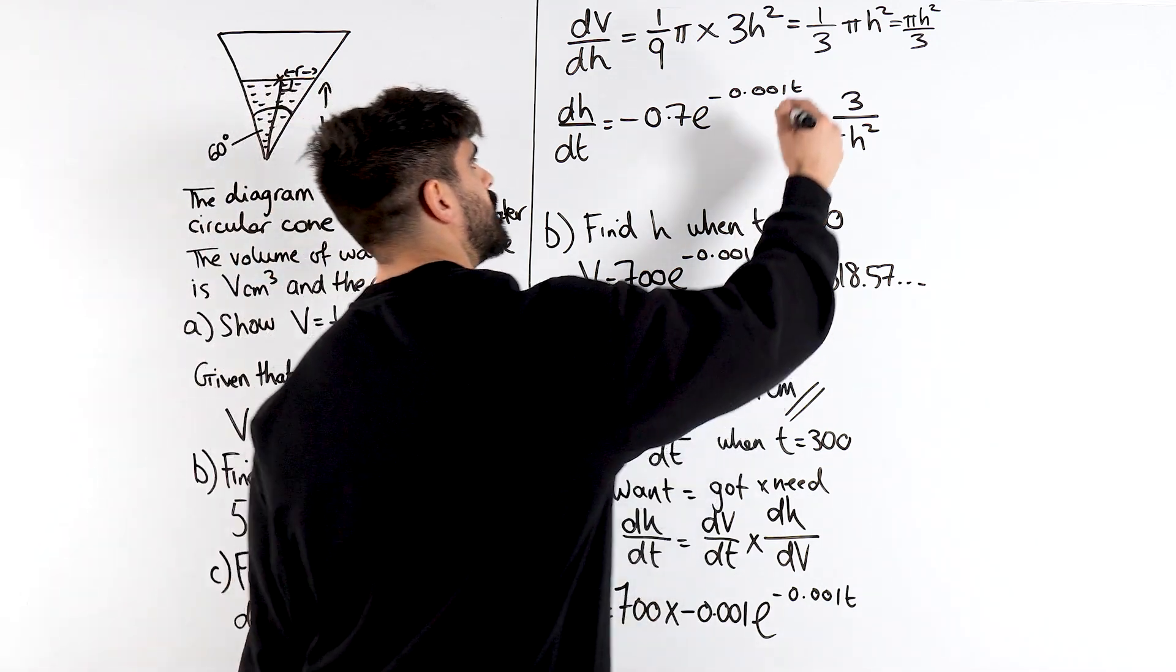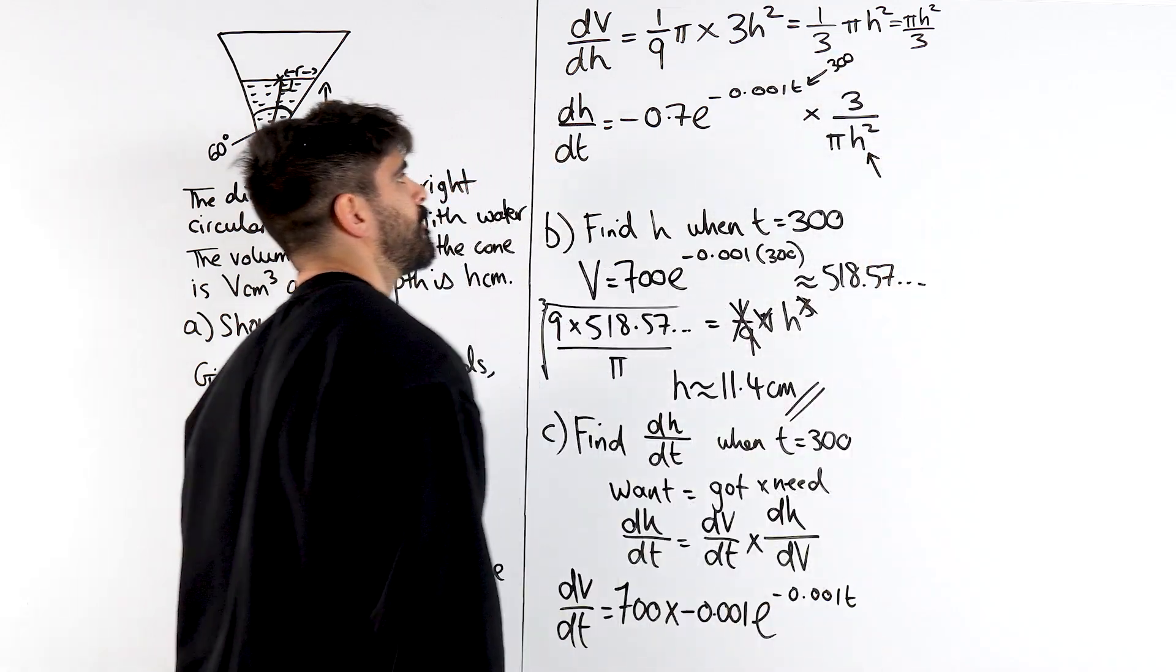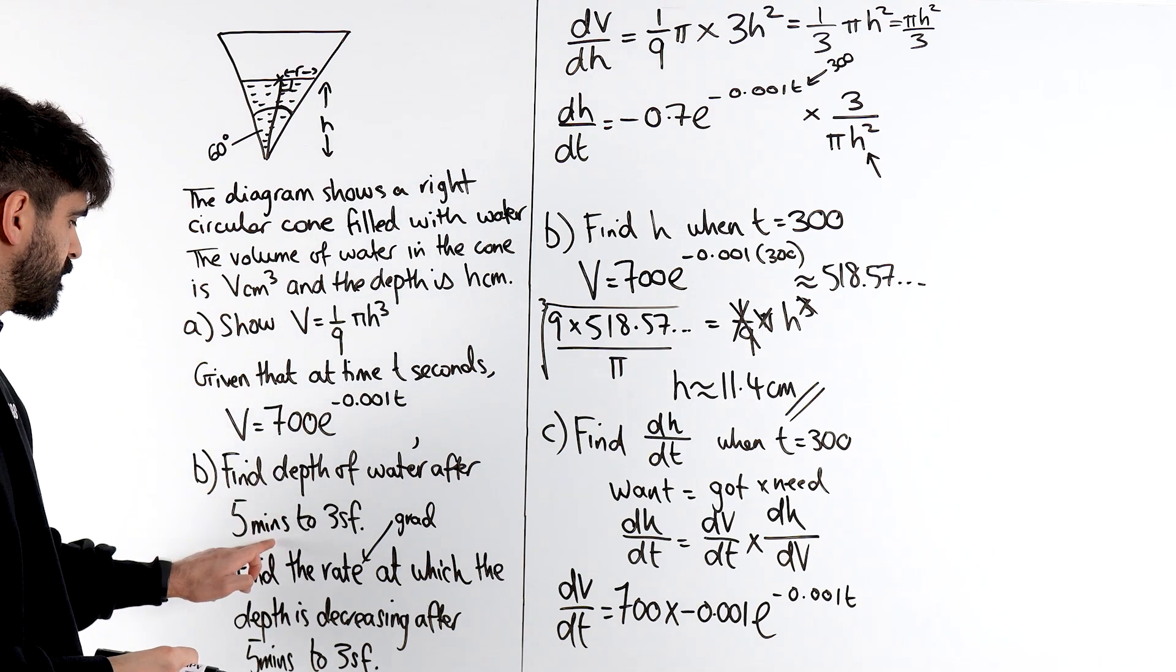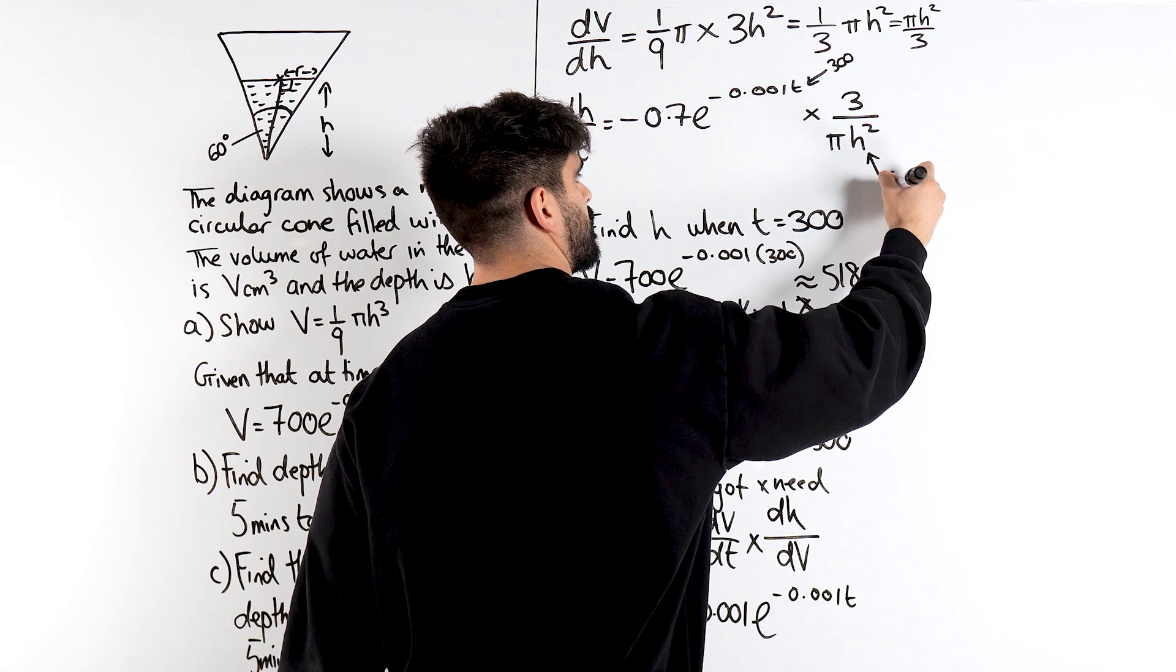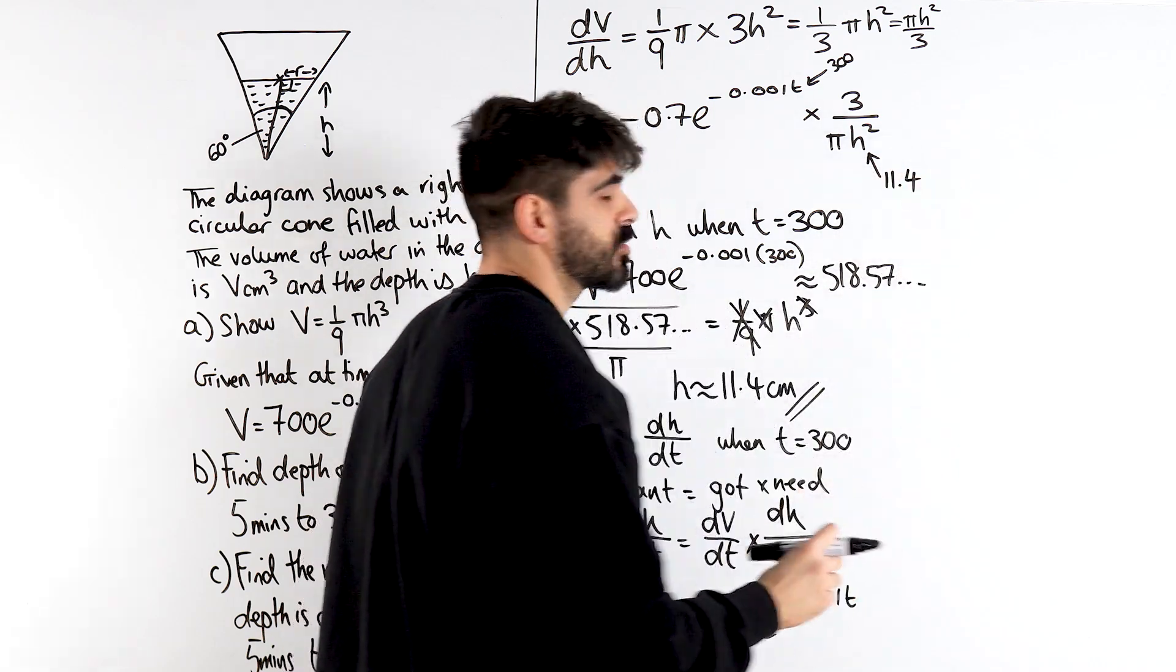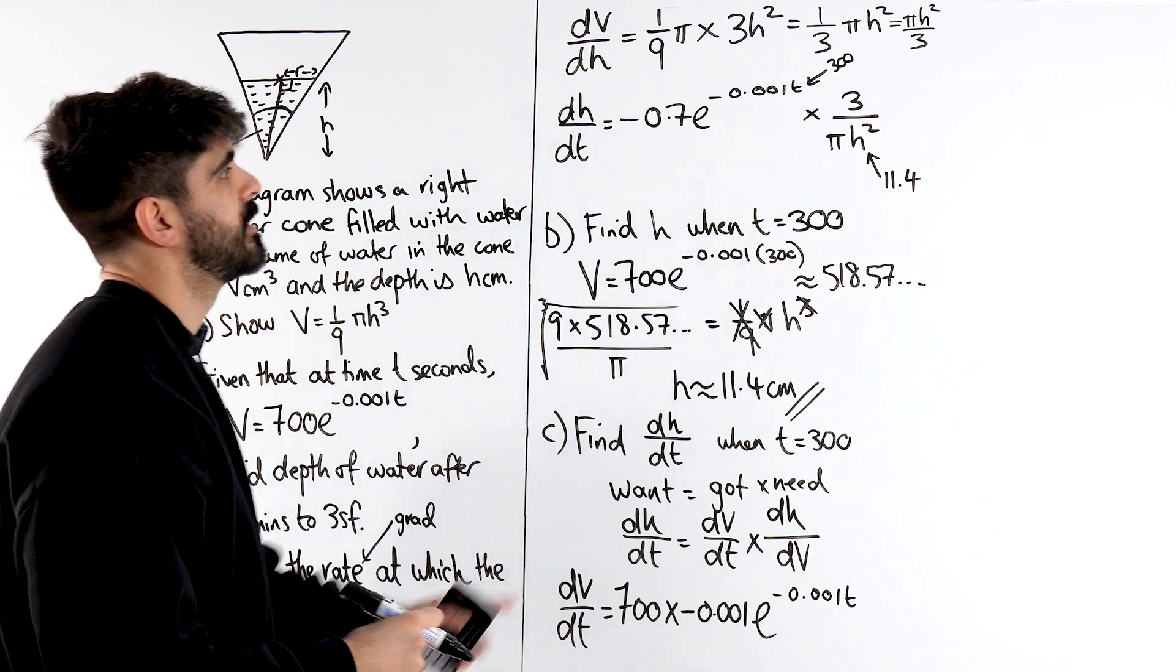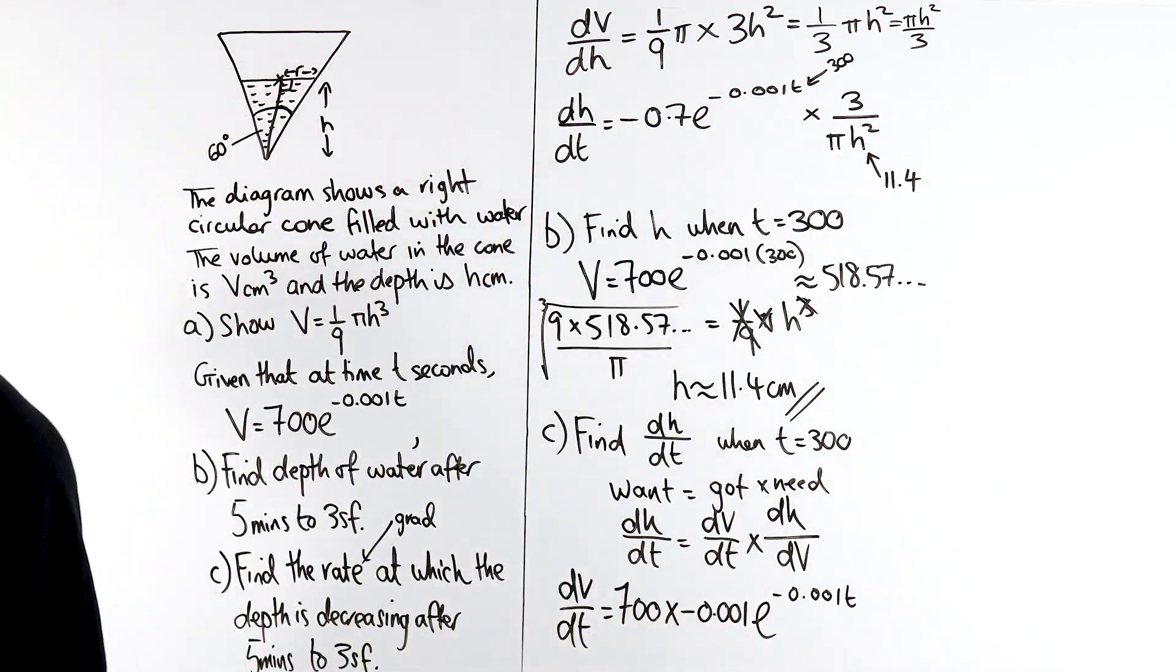And then, all we need to do is substitute our values. So, we know T is 300 and we know H because we worked out previously, H after 5 minutes is 11.4. So, this is the cool thing about this question. Things link together. And that's why they strategically put both of them to be 5 minutes because then we know all of the values at those points.